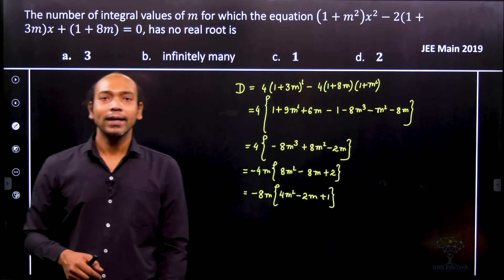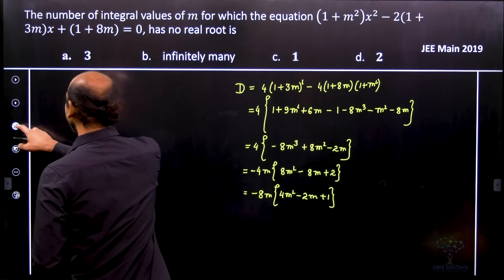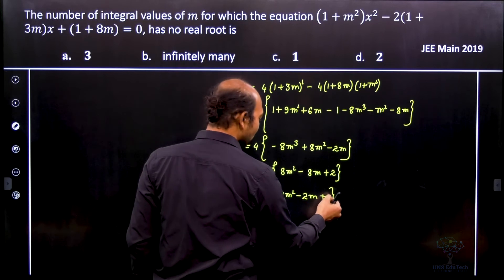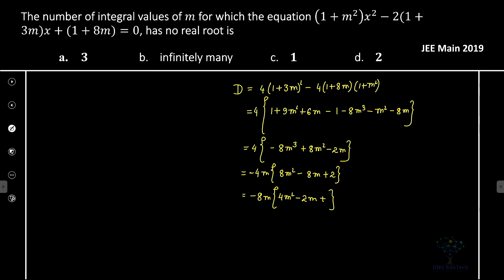Now see that. Can we rewrite that in some form? Yes, you can see that. So here we can easily say this resultant form can now be rewritten as -8m[(2m - 1)² + 1].